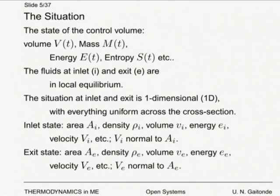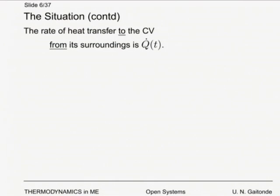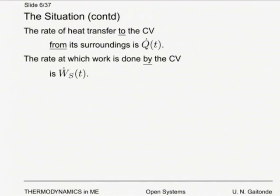Similarly, the exit state is denoted by subscript e. We assume velocities are normal to the area, so v_i refers to the normal component for the flow rate — any off-normal component should be included in the kinetic energy. The rate of heat transfer to the control volume is Q̇(t) in watts or kilowatts. The rate at which work is done by the control volume is Ẇ_s(t), which may also be time-dependent.